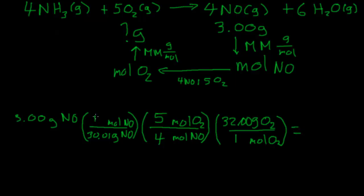So what is all this telling me that I need to do in my calculator? Take three, multiply it by one, multiply it by five, multiply it by 32, then divide that by 30.01, divide that by four, and then you'll get the answer. You can check that all your units cancel out. Grams of NO cancel out, moles of NO cancel out, moles of O2 cancel out, and you're left with the right unit - grams of O2. That's the question we were trying to answer.